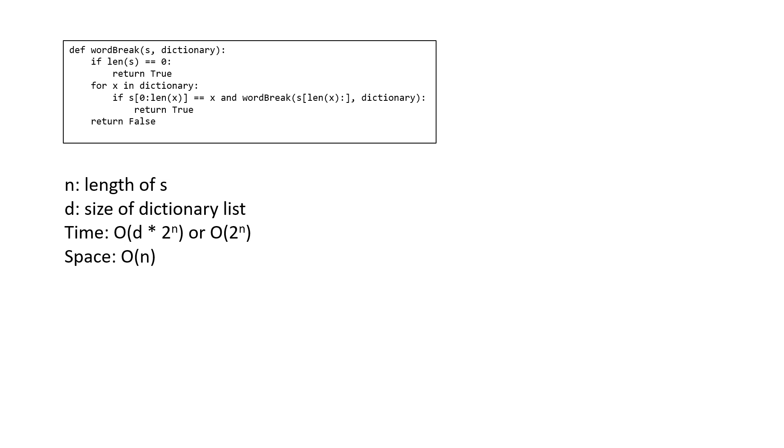Now that we have the brute force solution, you might want to pause and try to improve upon it. The first method we can use to speed things up is memoization, commonly known as a top-down approach in dynamic programming problems. Whenever there are overlapping subproblems with recursion, this is a common place to use memoization.